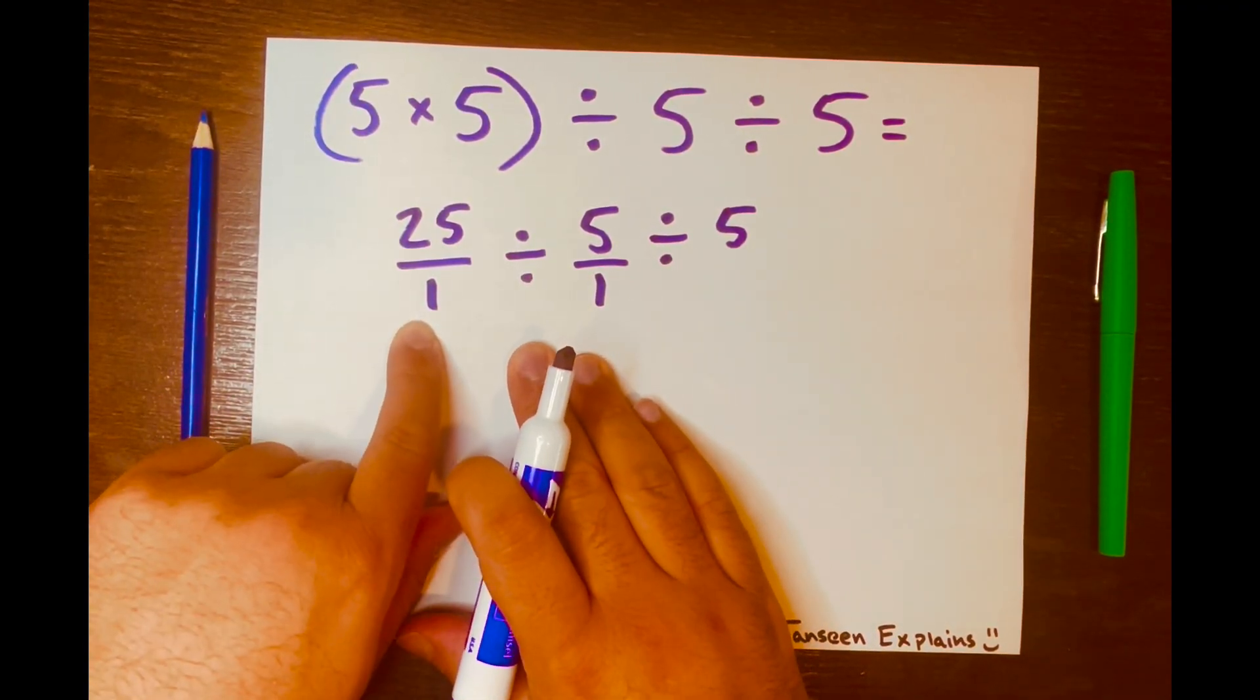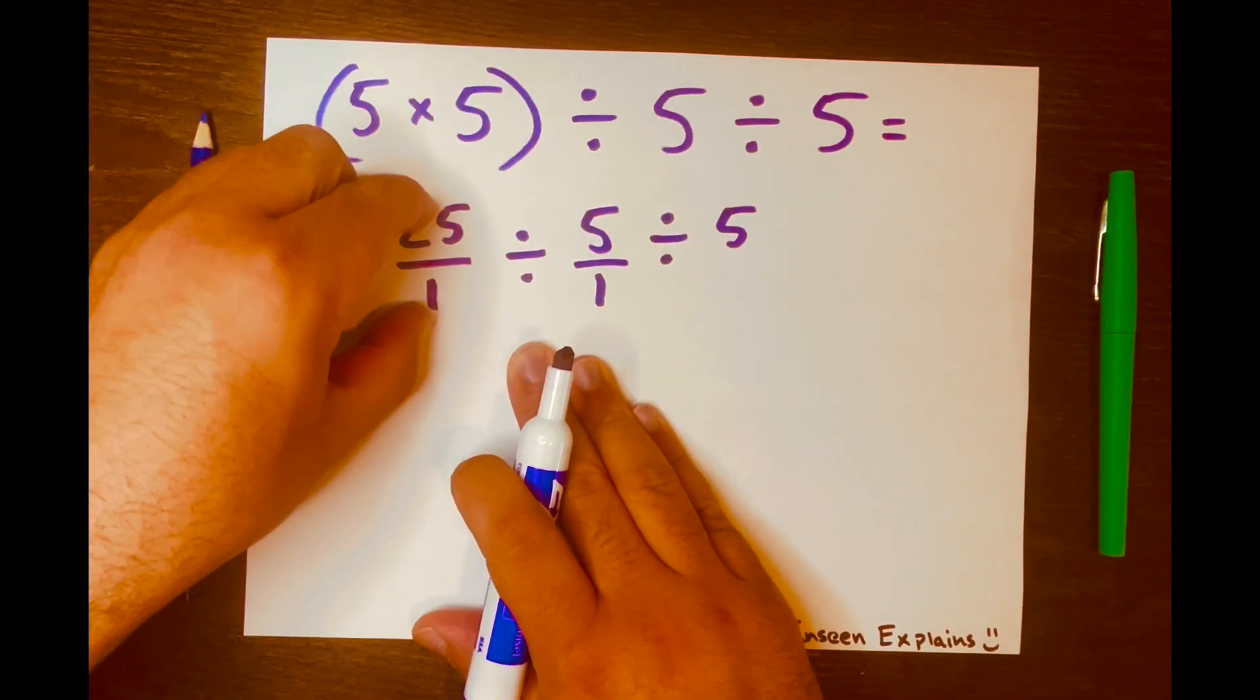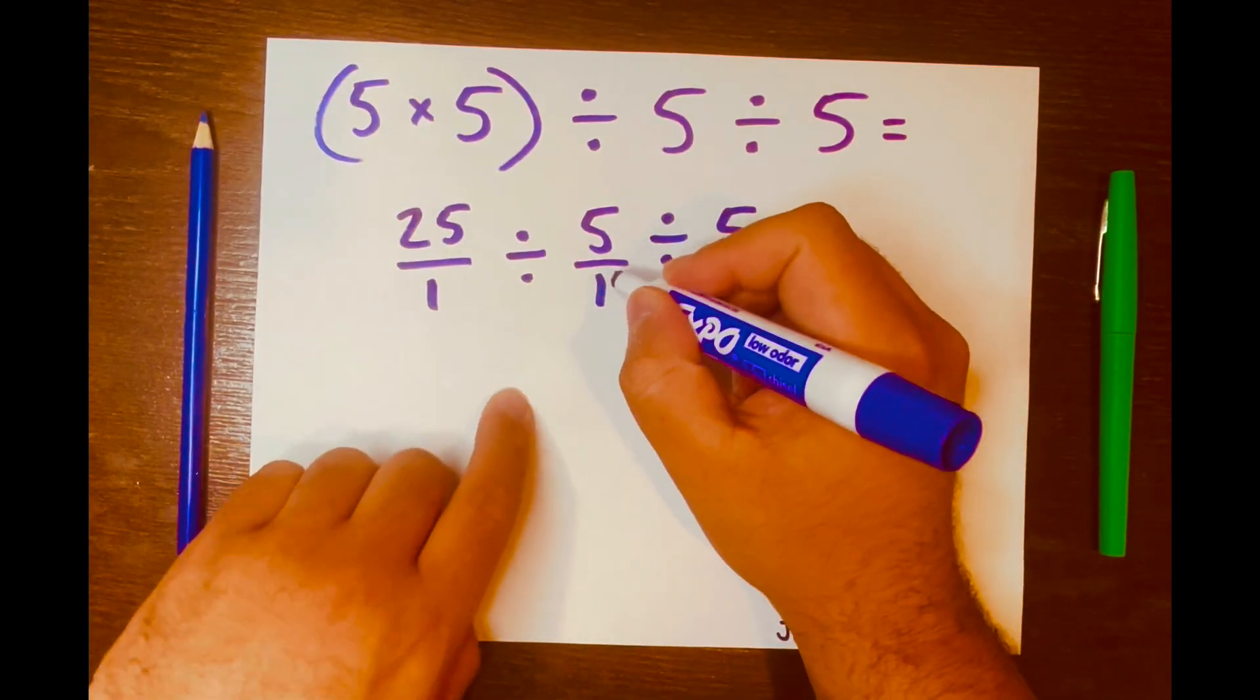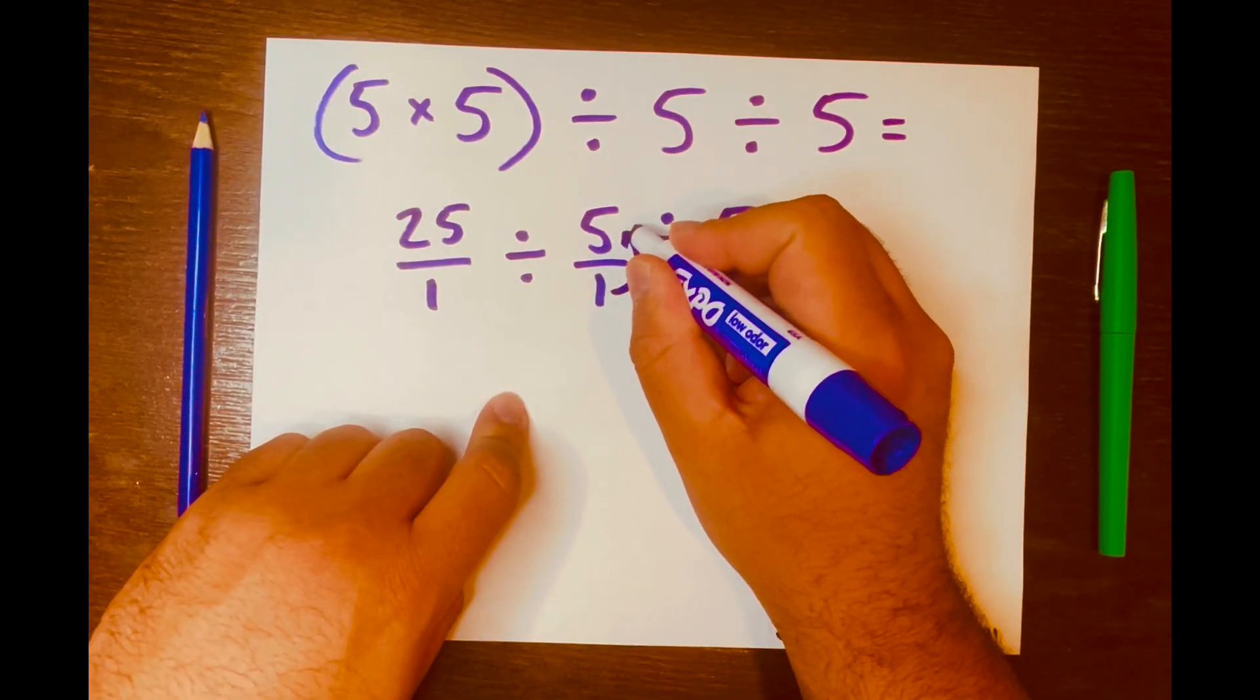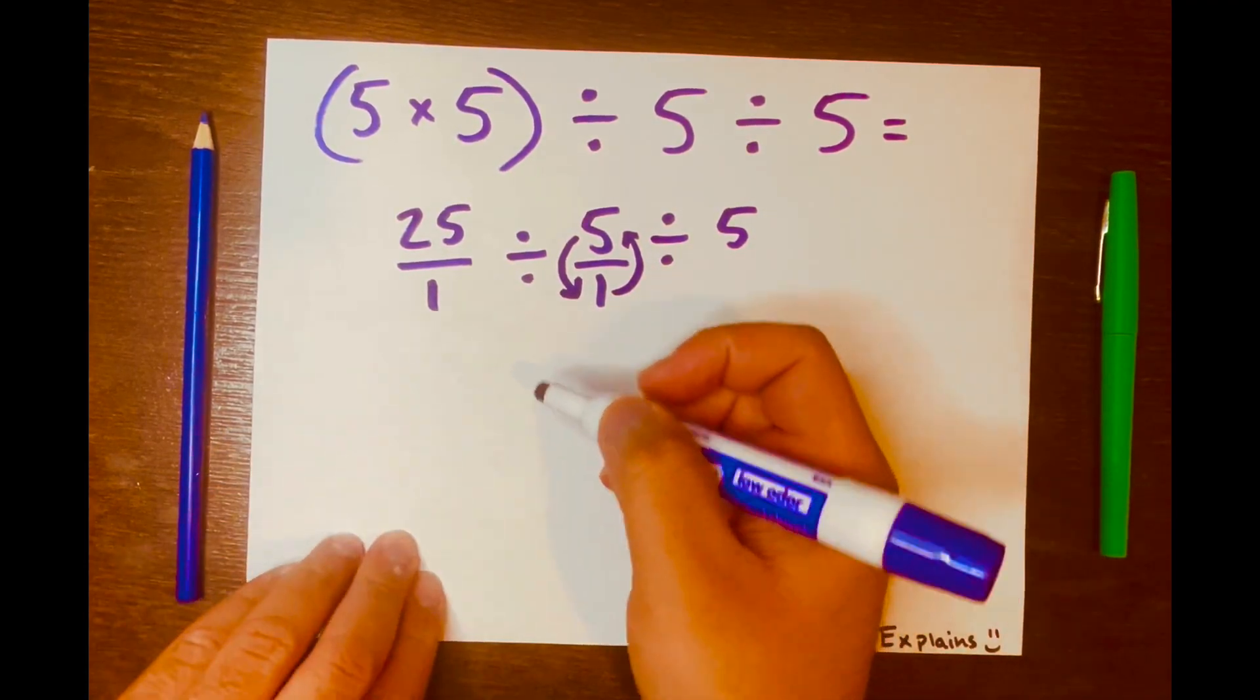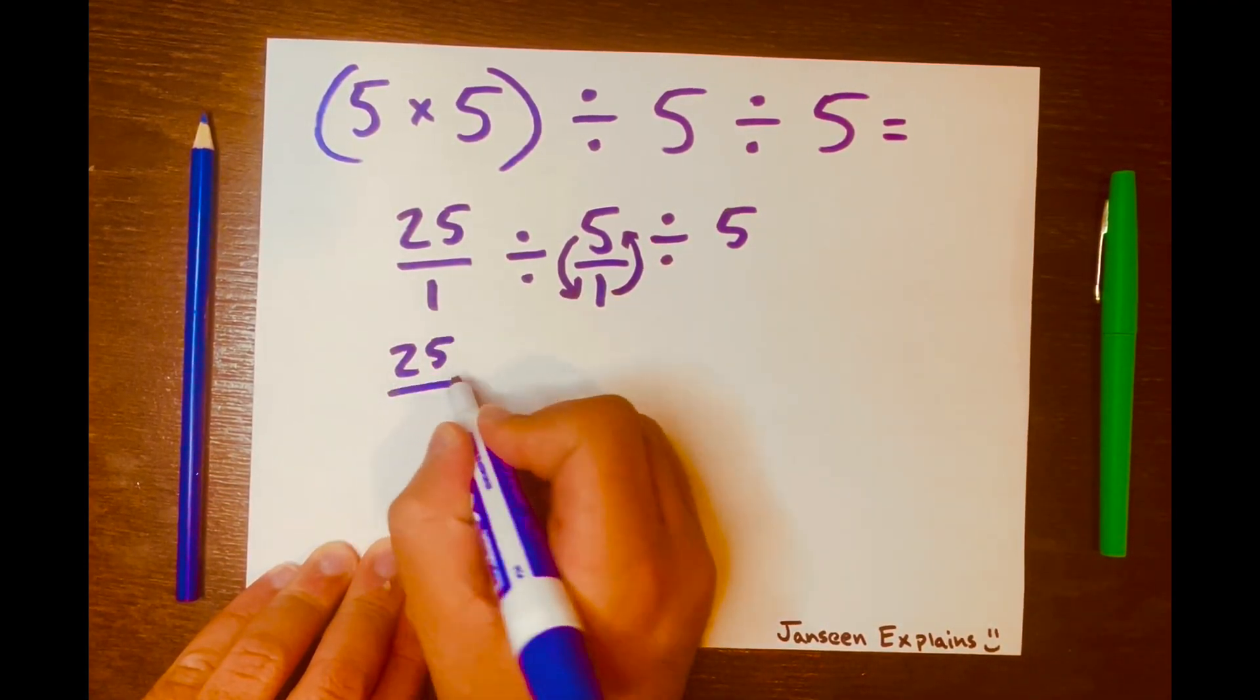And we're going to use that method called keep change flip, where we'll keep this, then change the division symbol to multiplication, and then lastly we're going to flip this fraction so the 1 will be written on the top of the fraction and the 5 will be written at the bottom of the fraction.